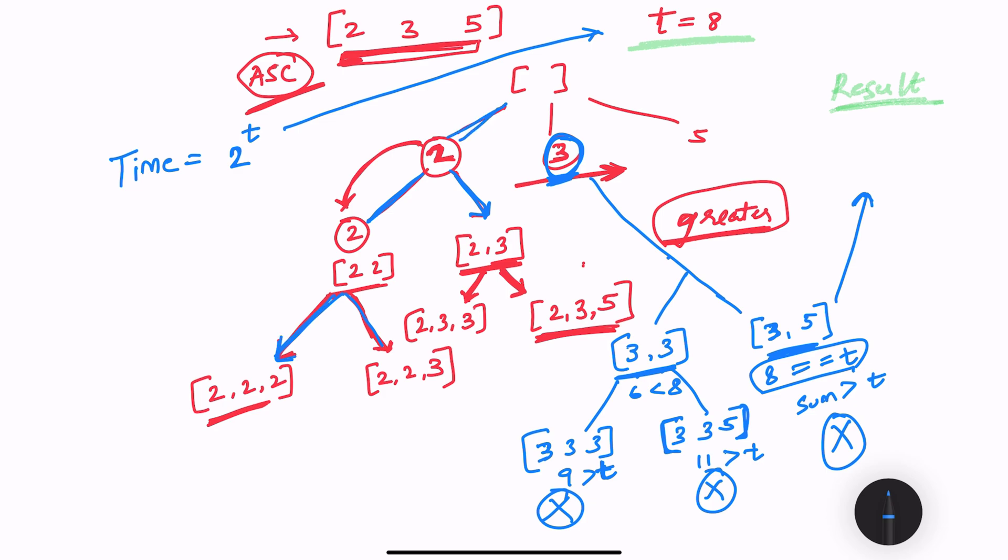And the maximum depth of this tree is going to be equal to the value of t, because we won't be going deeper than that. I hope you were able to understand this explanation to solve the problem efficiently.